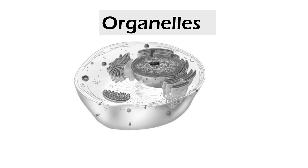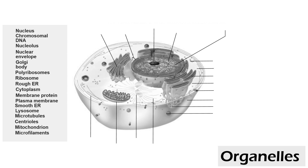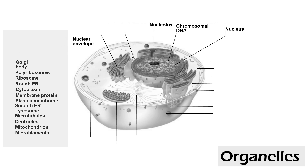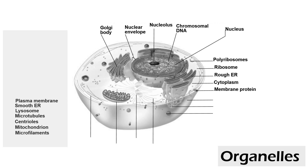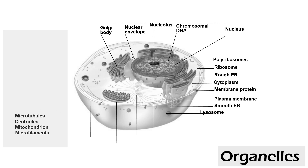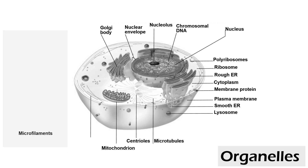In this video we will take a quick look at organelles in an animal cell. The different organelles we're going to look at today are the nucleus, the chromosomal DNA, nucleolus, the nuclear envelope, the Golgi body, polyribosomes, ribosome, rough endoplasmic reticulum, cytoplasm, membrane protein, the plasma membrane, the smooth endoplasmic reticulum, lysosome, microtubules, centrioles, mitochondrion, and microfilaments.